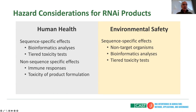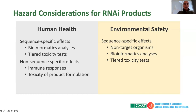In the case of human health, you also have the possibility of non-sequence-specific effects that may elicit an immune response. When a product is formulated and sprayed, that formulation may have to be examined for its immunogenicity. For environmental safety, much the same considerations apply at the sequence level in bioinformatic analyses. Here, you're really looking at tiered toxicity tests against non-target organisms that might be present in the crop of interest.